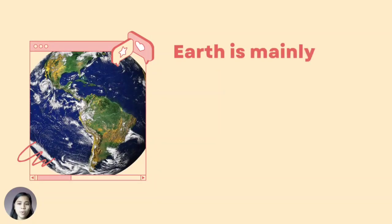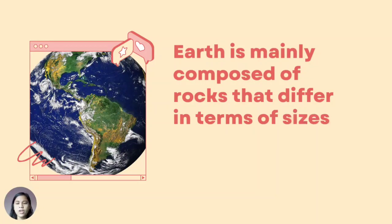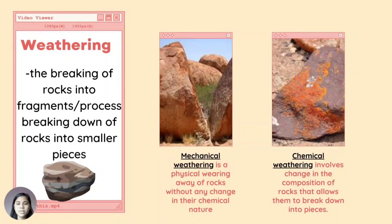Earth is mainly composed of rocks that differ in terms of sizes, shapes, and colors. Though rocks seem to be very hard, dense, and indestructible, they still break. Rocks are broken down into smaller pieces by the effects of weather. These pieces do not move to a new location. They simply break down but remain next to one another. The breaking of rocks into fragments is known as weathering. Weathering is an important process that helps shape the Earth's surface. The breaking of rocks results in the formation of soil in different landforms. This is also the reason why we have amazing rock formations.